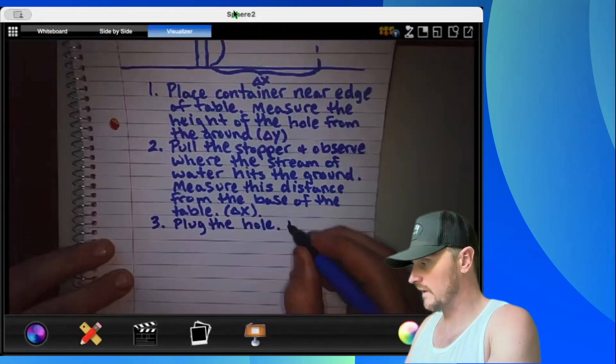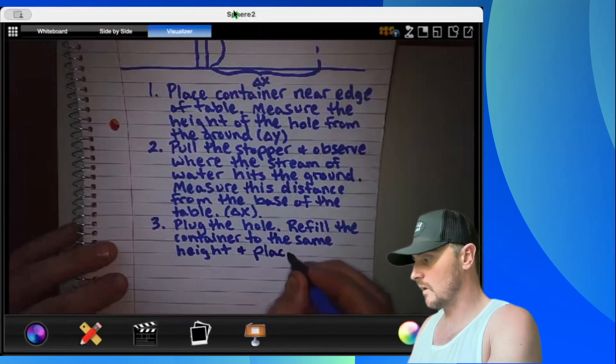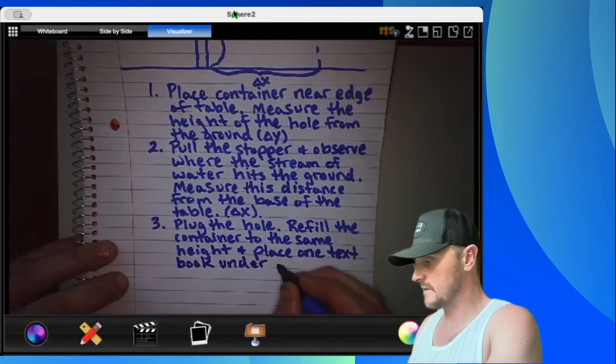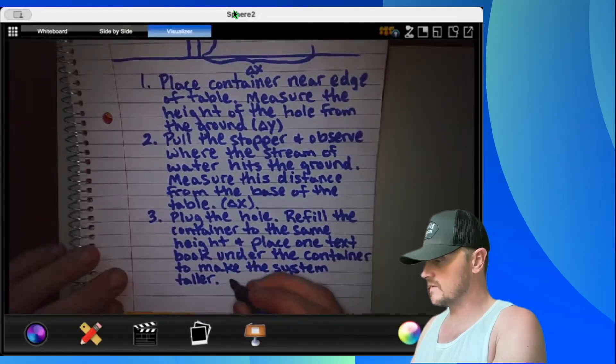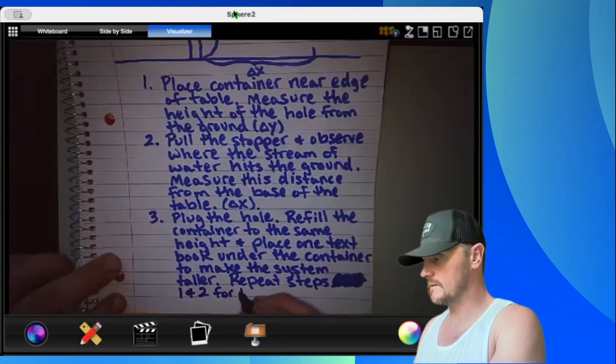Step 3: Plug the hole. Refill the container to the same height and place one textbook under the container to make the system taller. Then we would say repeat steps 1 and 2 for this new height.